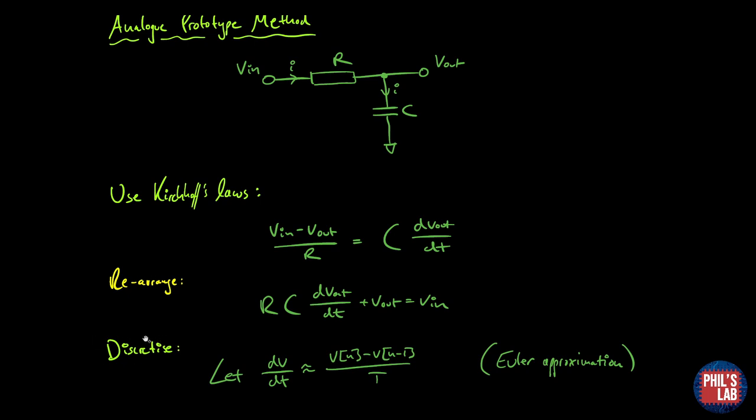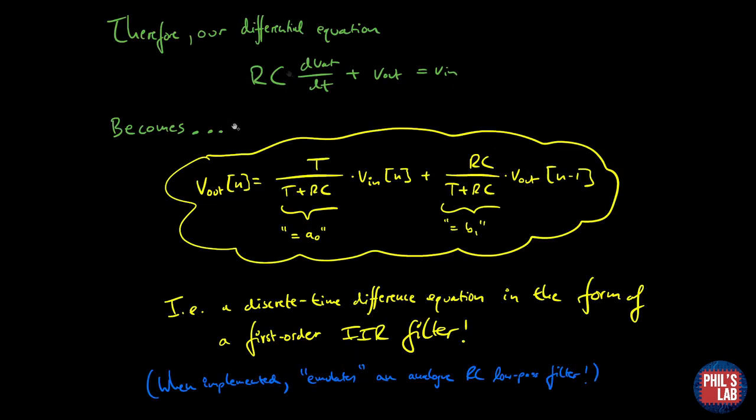I can let dV by dt or a first order derivative approximately be equal to V[n] minus V[n minus 1] divided by T which is the sampling time. That's an Euler approximation and it comes from a first order Taylor series expansion. Plugging that into the differential equation and discretizing and then also rearranging, we form this difference equation. V out at sample n is this constant, T over T plus RC, times V in which is the input plus another constant times the previous output, V out of n minus one.